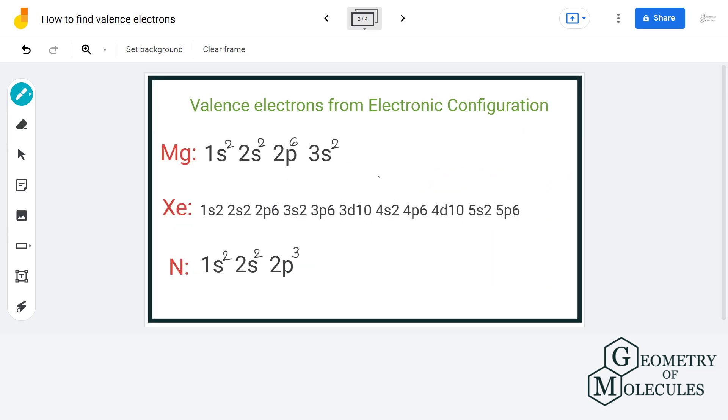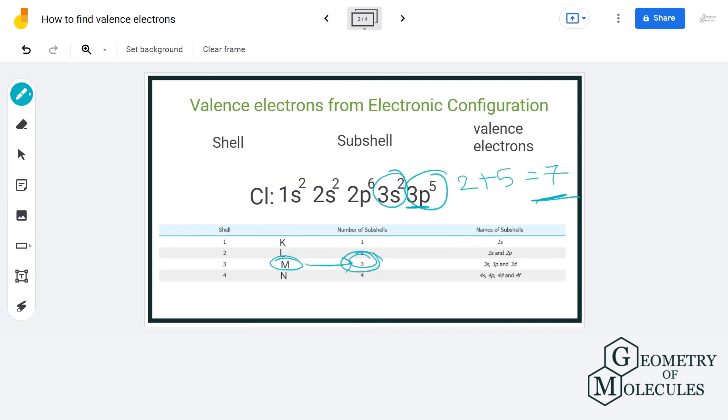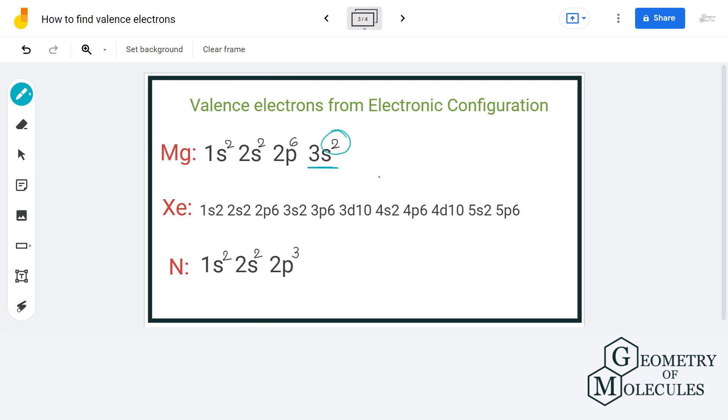Let us see some more examples. Here the last shell that the electrons are entering is in the shell M, that means shell number three. So there are two electrons in last shell, so the valence electrons that magnesium has are two.